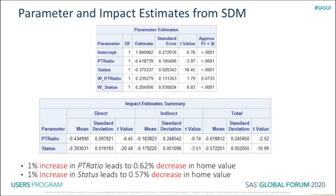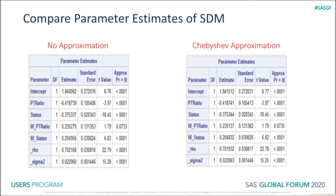The take-home message here is that parameter estimates from spatial econometric models do not always have the same straightforward interpretation as in classical linear regression models. PROC SPATIALREG also supports two approximation methods: Chebyshev approximation and Taylor approximation. For the purpose of demonstration, we also fit SDM to the Boston housing data using Chebyshev approximation. Comparison between the parameter estimates from SDM with and without approximation shows they are very similar. However, fitting SDM with Chebyshev approximation can reduce computation time significantly.